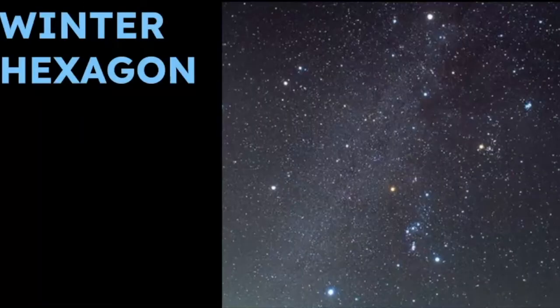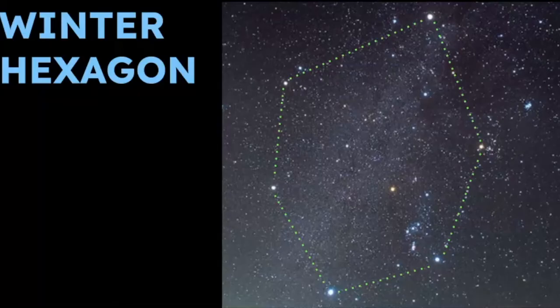Capella is also a part of the asterism known as the winter hexagon. And the winter hexagon is another asterism that can be seen during the winter months in the northern hemisphere. And it's a very large asterism that connects the six brightest stars of all these different constellations in the winter sky. And it can be a challenge to point this out simply because the asterism is so large in the sky.